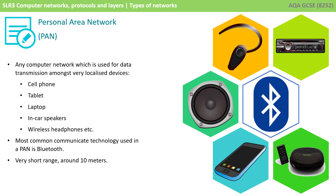A personal area network, or PAN for short, is any computer network which is used for data transmission amongst very localised devices. You might be used to several Bluetooth-style PAN devices like cell phones, tablets, laptops, in-car speakers, or wireless headphones.